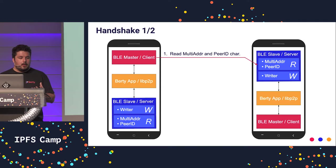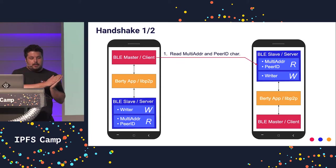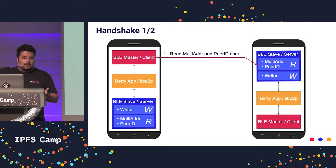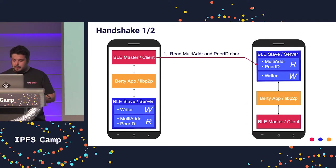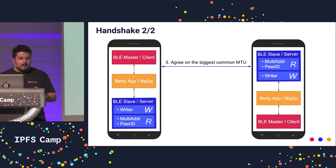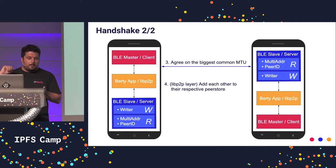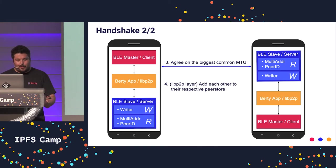When you find another peer, you can start the handshake, and you have two parts in your application: the GATT master and the GATT slave. LibP2P will call the BLE master of your BLE application. It will read the multi-address and the peer ID characteristic of the BLE slave of your peer. Then the driver will block until your peer has read your own characteristics. Both devices can then agree on the biggest common MTU, which will have a huge impact on your performance. At the LibP2P level, both peers will add each other in their respective peer store, so it's also a peer discovery service.